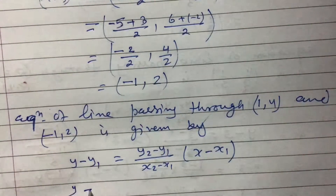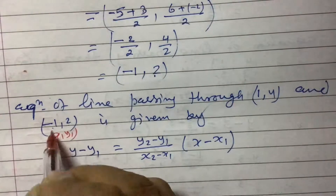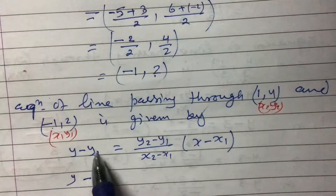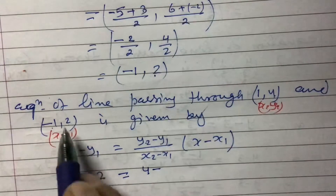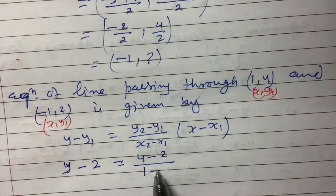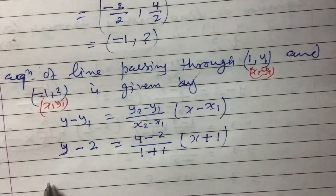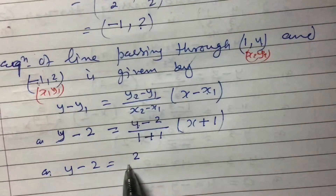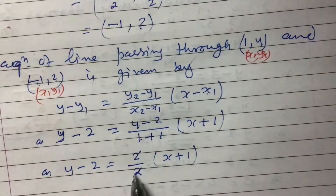Let us consider (-1, 2) as (x1, y1) and (1, 4) as (x2, y2). Substituting: y minus 2 equals (4 minus 2) divided by (1 minus (-1)), multiplied by (x minus (-1)). This gives y minus 2 equals 2 divided by 2, multiplied by (x plus 1). Since 2 divided by 2 equals 1, we get y minus 2 equals x plus 1.